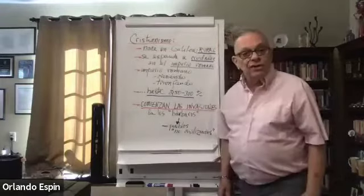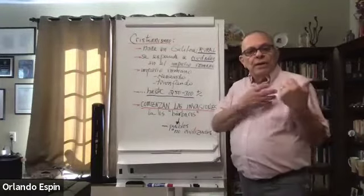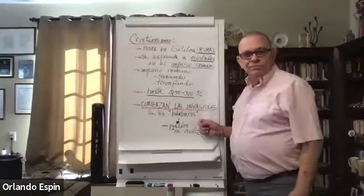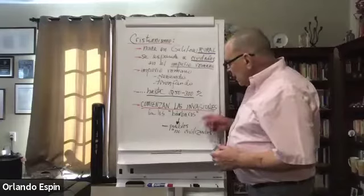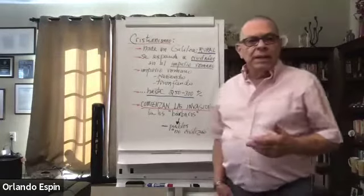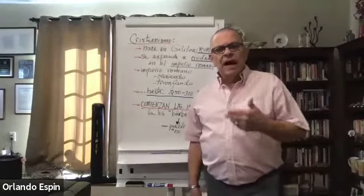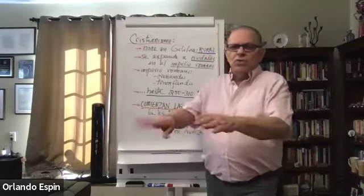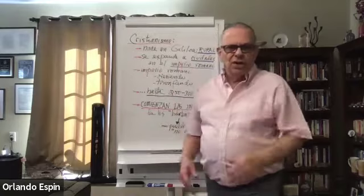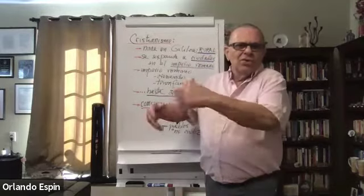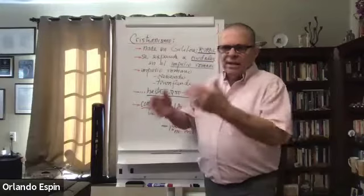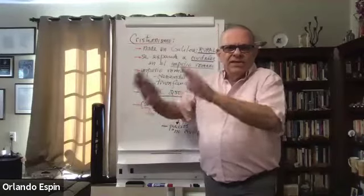Ahí empieza a suceder algo que los romanos jamás pensaron que iban a tener que enfrentar y que iba a acabar con ellos. Comienzan las invasiones de unos pueblos que ellos, los romanos, llaman los bárbaros. Que esto es un modo de referirse a esos pueblos como diciendo, ustedes son unos incivilizados. Los griegos hacían lo mismo también. Son unos incivilizados.